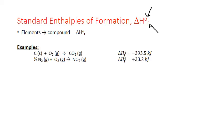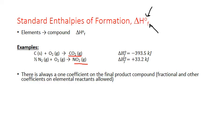Notice that the reaction is always written with the compound formed as the only product, while the reactants are always the elements that must be combined to make that compound. So carbon dioxide is formed from carbon and oxygen, and nitrogen dioxide from nitrogen and oxygen. By convention, these equations are always balanced so that there is a one coefficient on the final product, and this might mean that you'll need a fractional coefficient on one or more of the reactant elements to make the equation balance, as in this second example here.